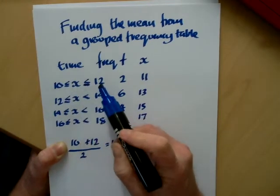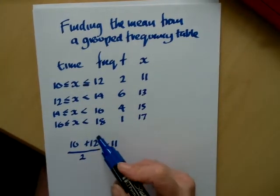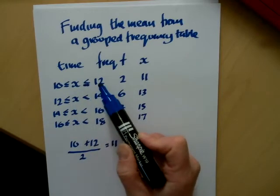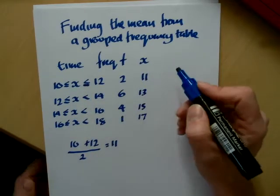Now if these intervals were larger numbers, simply use your calculator. So the method is to add the first and the last together and to divide by 2.